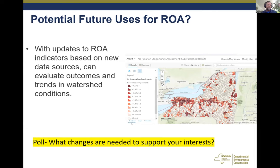Some of the metrics going into the rollup overall condition and stressor metrics were based on things like land use and land cover data sources, and those do change over time. Having an updated rerunning of this with an updated version of land use and land cover I think would be pretty instructive. And if you look at the detail in the lists of metrics we used, there may be others that could be included and applied.